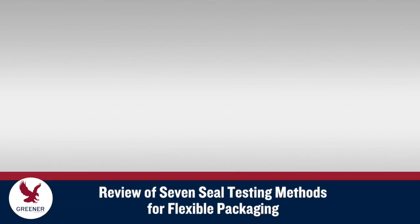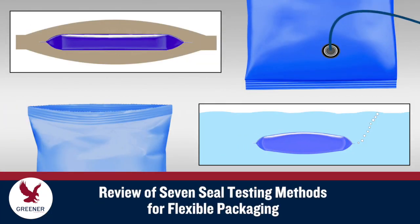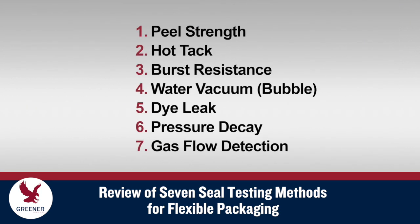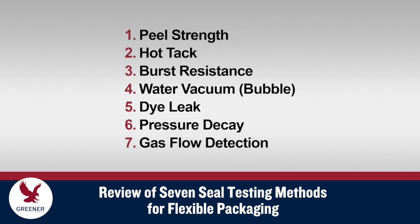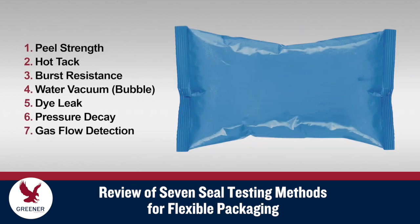This Greiner Tech Byte explains the objectives, methods, results, and limitations of seven common seal tests for packages produced by flow wrappers and vertical baggers. We begin with seal strength tests, followed by tests for hermeticity, and conclude with a summary chart for easy comparison.